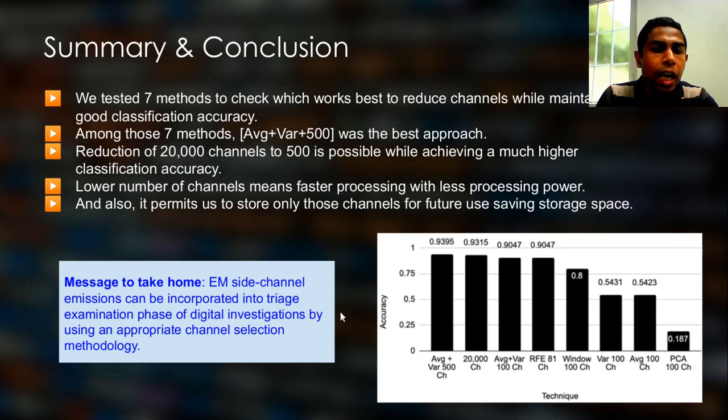So, in summary, we have tested 7 methods to check which works best to reduce channels in EM side channel datasets. We wanted to achieve this while maintaining a good classification accuracy. Among these 7 methods we tested, Averaging among classes and variance thresholding across the classes to select 500 channels produce the best result. This means a reduction of original 20,000 channels down to 500 channels is possible while maintaining classification ability of the software activities. Lower number of channels means faster processing with less computing power. It also permits us to store only the useful channels for future processing that saves storage space.